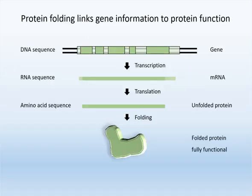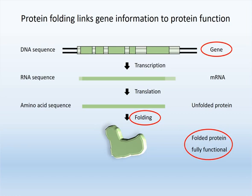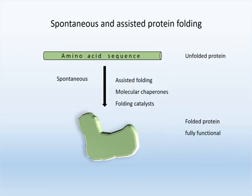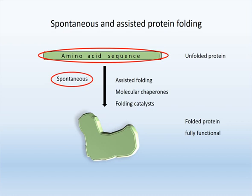Protein folding is an essential step in the flow of information from genes to fully functional proteins. The information of the three-dimensional structure of proteins is fully contained in the amino acid sequence. The majority of proteins spontaneously reach their fully folded state in the absence of further assistance.